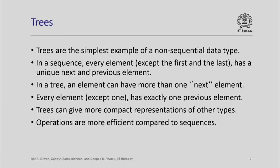In a tree we generalize this property: an element can have more than one next element, but every element still has exactly one previous element except for the first one. Trees are a generalization of sequences — instead of having just one next element we can have more than one. Trees can give more compact representations for other data types and operations on trees are more efficient compared to sequences.